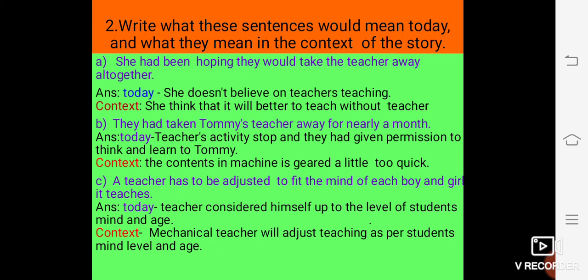The second sentence, they had taken Tommy's teacher away for nearly a month. Today's meaning of this sentence is, teacher's activity stopped and they had given permission to think and learn to Tommy. And the actual context meaning of this sentence is, the contents in machine are geared a little too quick.